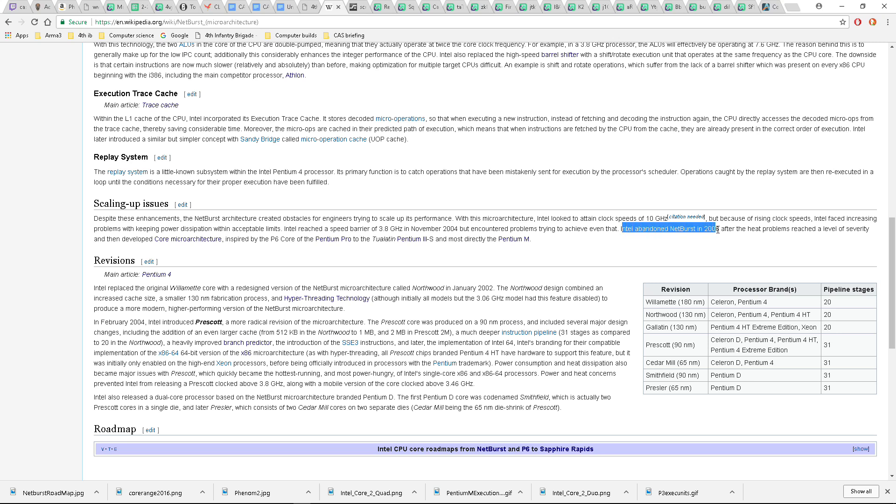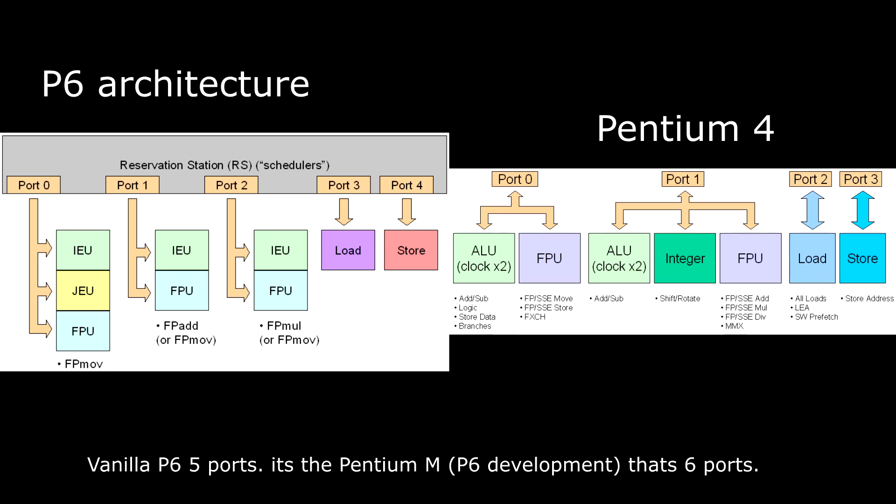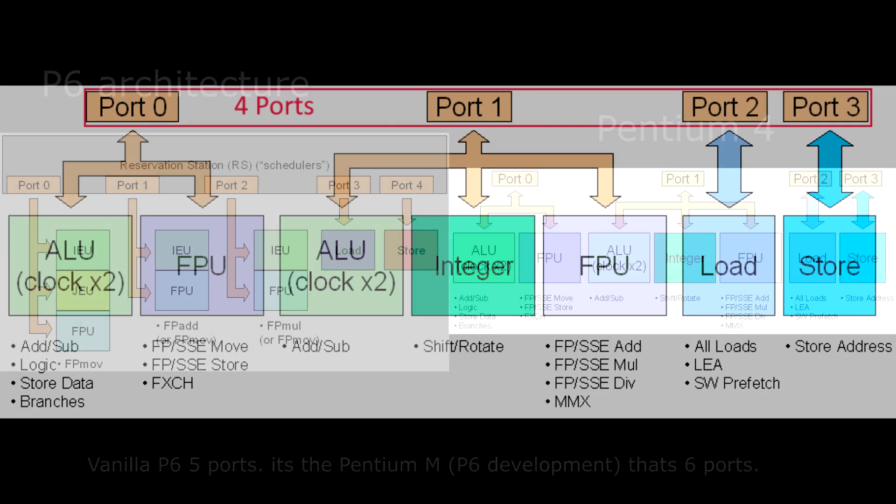Now, if it didn't seem bad enough, it gets worse. Quite a bit worse, in fact. Not only is the architecture very long, but very narrow. How narrow? Well, it's 4 ports wide, whereas the P6 was 6 ports wide.